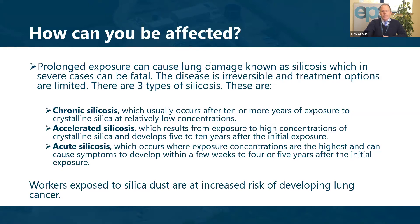Prolonged exposure can cause lung damage known as silicosis, and in severe cases that can be fatal. It's irreversible and the treatments available at the moment are limited. There are three different forms: chronic silicosis, which is exposure to low levels of silica dust for a long period of time; accelerated silicosis, which results from exposure to high levels over a period of five to ten years; and acute silicosis, which is a rapid, aggressive form where people are exposed to really high levels for a short period, typically from a couple of weeks up to a couple of years. It's important to note that workers exposed to silica dust have the potential to develop lung cancer as a result.